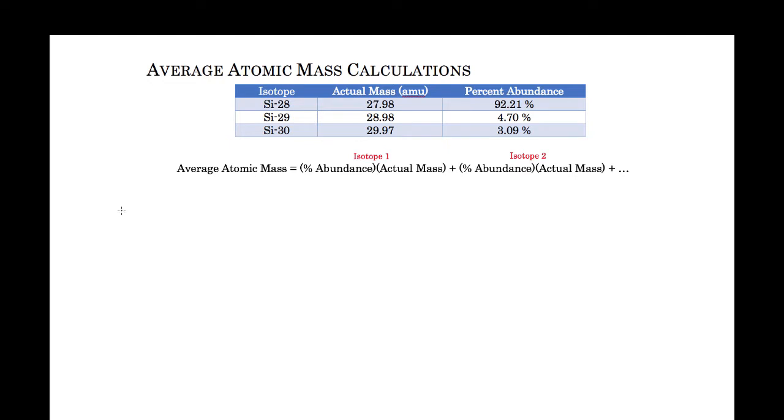To do that we're going to look at silicon. We have some data here representing three isotopes of silicon and the numbers, 28, 29, and 30, are the mass numbers that distinguish between the three various isotopes.